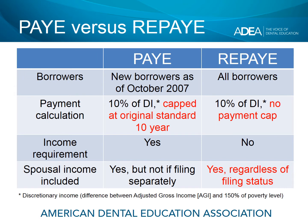Let's take a look at some of the key differences between PAY and REPAY. First, REPAY is available to all borrowers regardless of when you first started borrowing. PAY is more restrictive — it is only available to new borrowers as of October 2007. If you are an older borrower who had federal debt before October 2007, you cannot apply for PAY unless you paid that debt off in full before taking out another loan after that date.